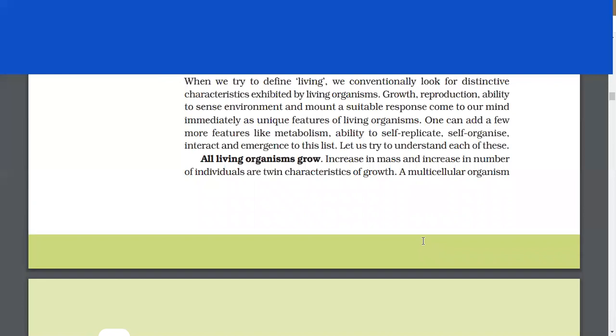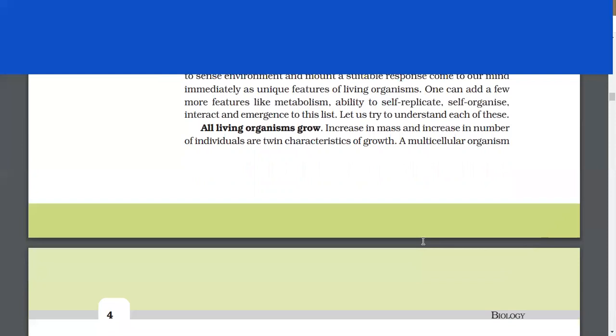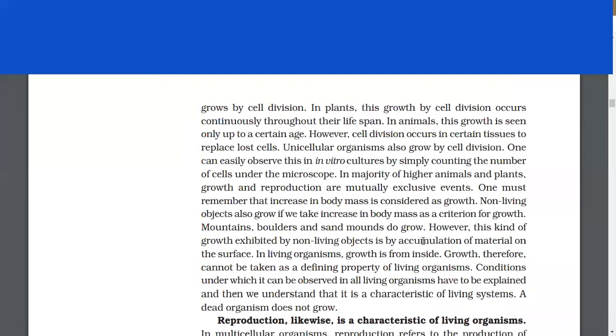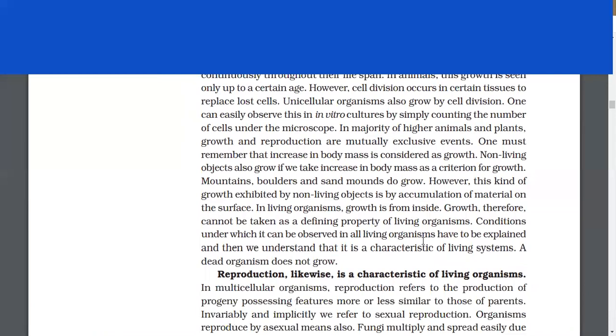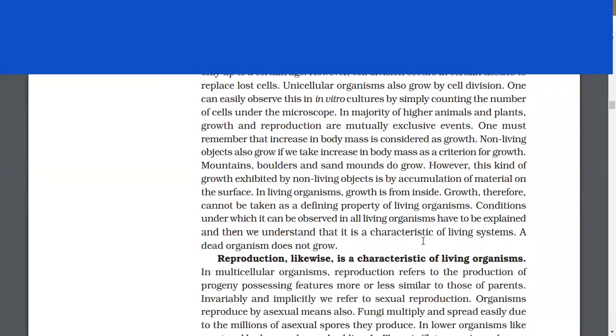All living organisms grow. Increase in mass and increase in number of individuals are twin characteristics of growth. A multicellular organism grows by cell division. In plants, this growth occurs continuously throughout their lifespan. In animals, growth is seen only up to a certain age. However, cell division occurs in certain tissues to replace lost cells.